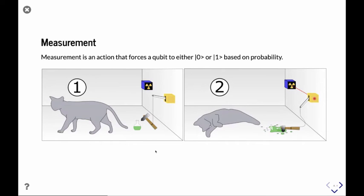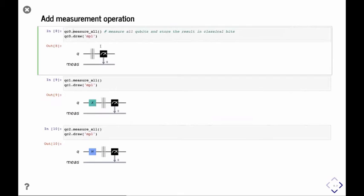To actually understand what the state is, we need to do measurement to find out the state in the quantum circuit. To do that, you can just do quantum_circuit.measure_all. You will see it adds some classical register and reads out the measurement to store the information to a classical bit. I did this for the three circuits we built just now: state zero, state one, and the state plus, which is zero plus one.